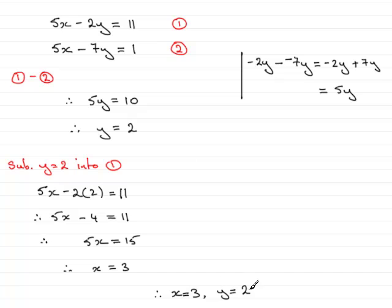And by the way, you can actually check these values if you like, just by substituting x equals 3 and y equals 2 into here. You can see that you get 11. 5 times 3 is 15, take away 2 times 2 is 4, 15 take away 4 is 11. And in this equation, 5 times the x value, 5 times 3 is 15, subtract 7 times the y value, y was 2, 7 times 2 is 14, so you have 15 take away 14 is 1. So you can see, it works.